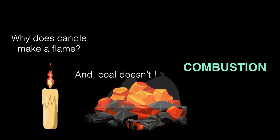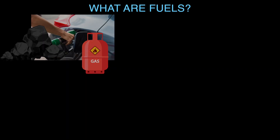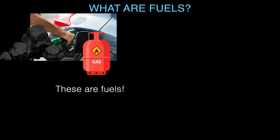First we need to understand what fuels are. Why are some things that burn called fuels and some things aren't? We use all kinds of fuels every day — for cooking, driving cars, even in big factories. At home we might use LPG, that's liquefied petroleum gas, wood, or even cow dung in some places. In factories, coal and diesel are super common, and cars usually run on petrol, diesel, or compressed natural gas.